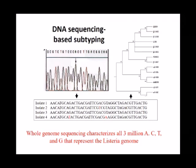The fingerprinting tools we use have changed. We no longer use banding patterns — we now use whole genome sequencing. Simplistically, it looks at all 3 million A's, C's, T's, and G's that represent the Listeria genome and uses that as a fingerprint. We can see that Listeria isolate 1 is different from isolate 2 because one has an A where the other has a T. Sequences are assigned sequence types — STs. So one Listeria could be ST1, another ST2, another ST3. It is a much more powerful fingerprinting tool because we use all 3 million base pairs, not just 10 to 12 bands.